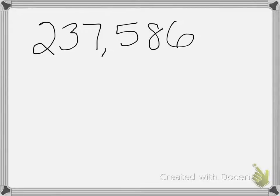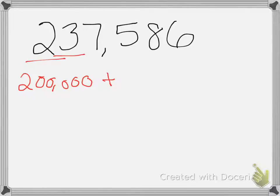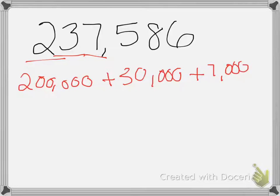If I wanted it in expanded form, I need to know the values or the worth of a number, so I need to know my place value to know how much that digit is worth. Starting with my 2 — it is in the 100,000th place value, meaning it's worth 200,000. Plus, my next digit is 3, it is in the 10,000th place, so it's worth 30,000. Plus, my next digit is 7, it is in the 1,000th place, its value is 7,000.